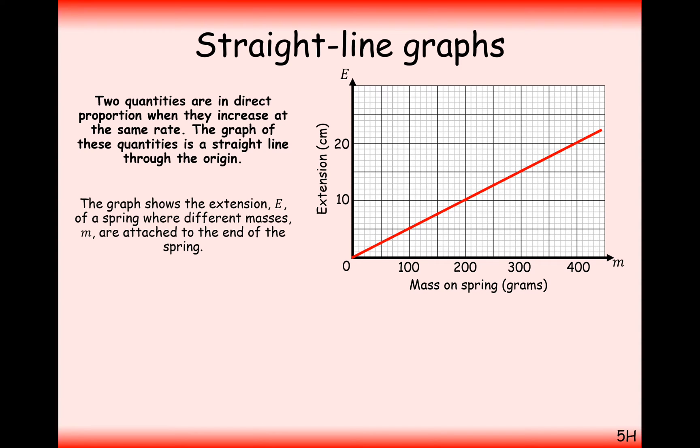Here we have a graph already given to us with the extension of a spring and the mass that's hanging off the end of that spring. First question here is to work out the gradient k of the line. The second question is to write out an equation and then it's to write the answer of this equation in a context.